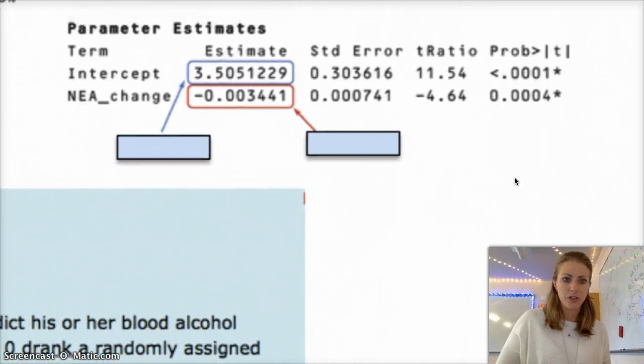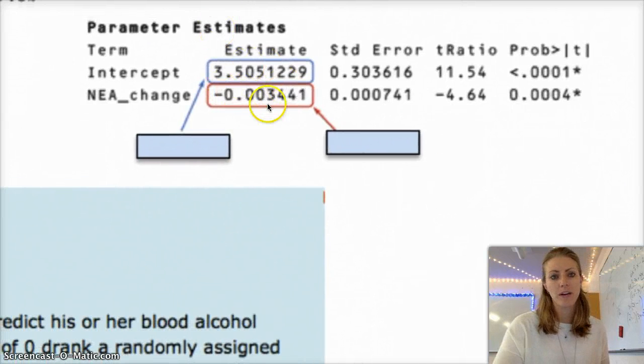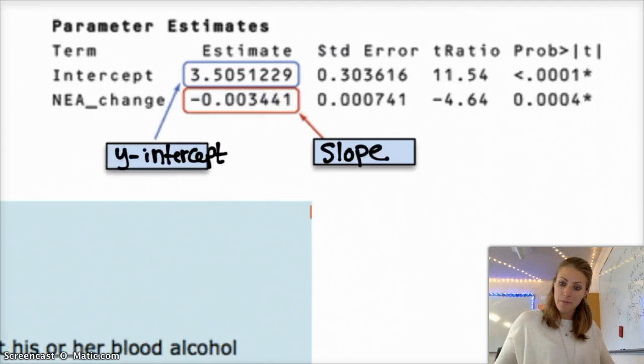And then if I want to figure out which one's the y-intercept here, and which one's the slope. Same kind of situation. I have my estimate for my parameter. So my intercept, in this case, they label it as intercept, is 3.505. So that's my y-intercept. And then my NEA change variable here, or my constant, my coefficient, there we go, that's the word I wanted. My NEA change coefficient is negative 0.003441, which is the slope. With that information, you should be able to answer most questions that come up.